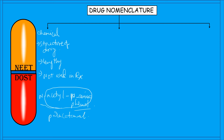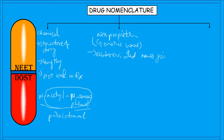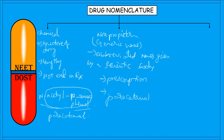The second type of name is the non-proprietary name, also called the generic name. These are abbreviated names given based on chemical structure by a competent scientific body or authority, and they are generally used in prescriptions. For example, the generic name for the paracetamol tablet is simply 'paracetamol'.